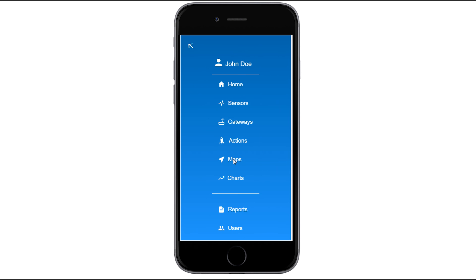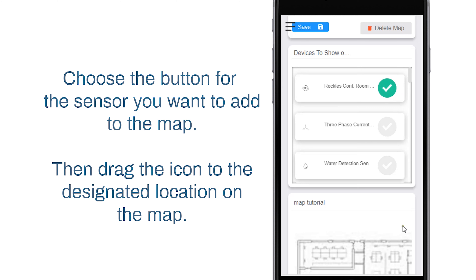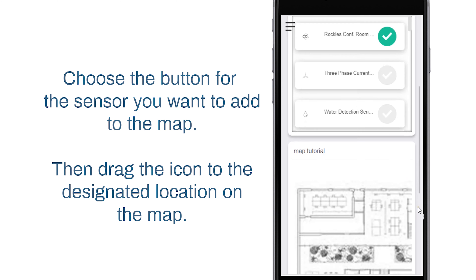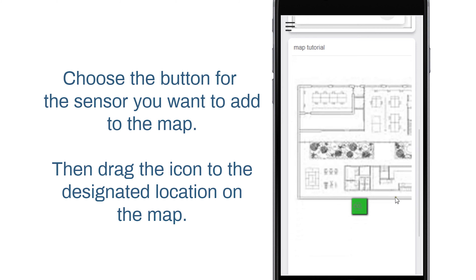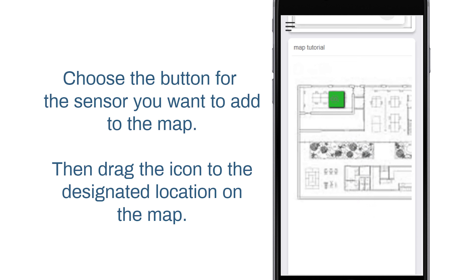Choose the button for the sensor you want to add to the map. The button will turn green, and the sensor icon will appear on the map. You can then drag the icon to the designated location on the map. Select the Save button to complete the process.